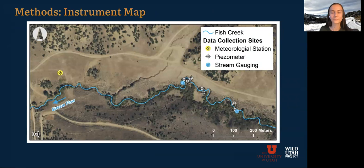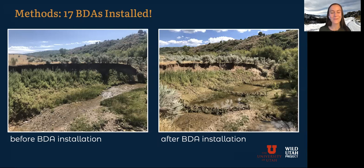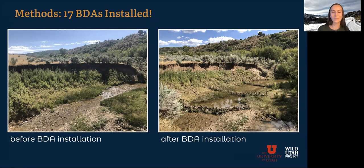Next, we got to install the beaver dam analogs. There were 17 dams installed in this reach, and these pictures show what just a little section of the stream looked like before BDA installation and after. We can see that there is definitely some water stored, at least on the surface. And so that's really cool, but we want to be sure that we're not storing so much water that it's impacting stream flow.